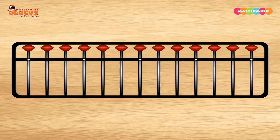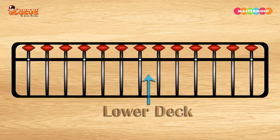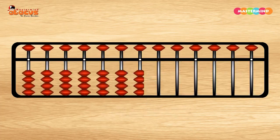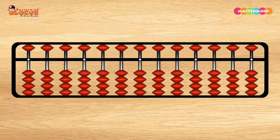The lower part is called Lower Deck. And the lower deck has four beads in each rod.